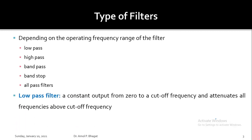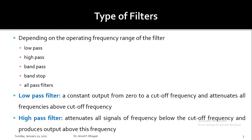A low-pass filter has a constant output from zero to a cutoff frequency and attenuates all frequencies above the cutoff frequency, allowing only low-frequency signals through. A high-pass filter attenuates all signals of frequency below the cutoff frequency and produces output above this frequency, allowing high-frequency signals while rejecting those below the cutoff.